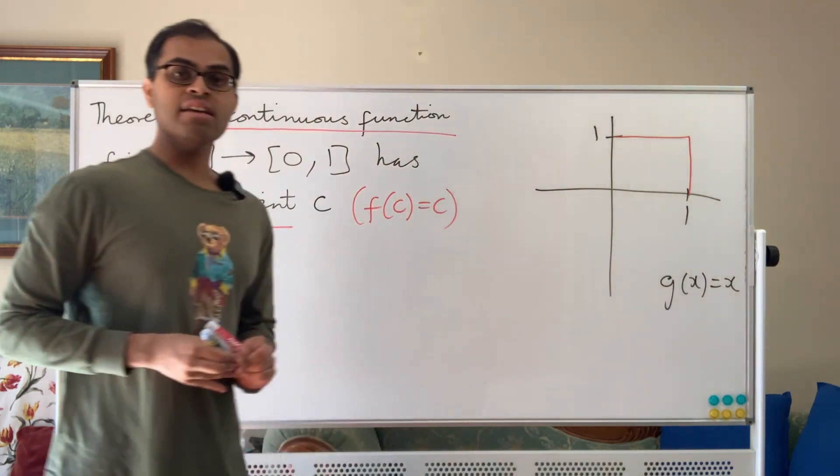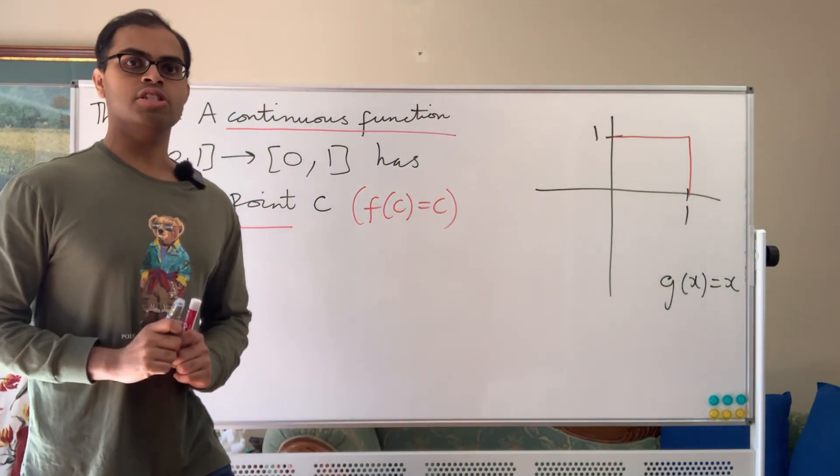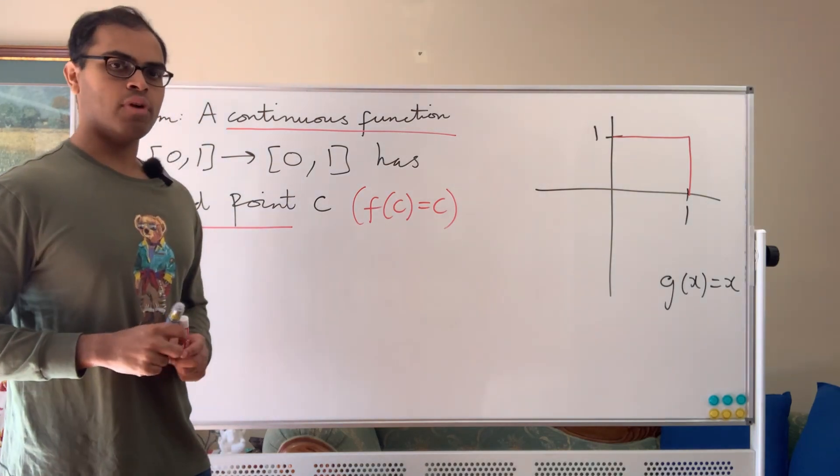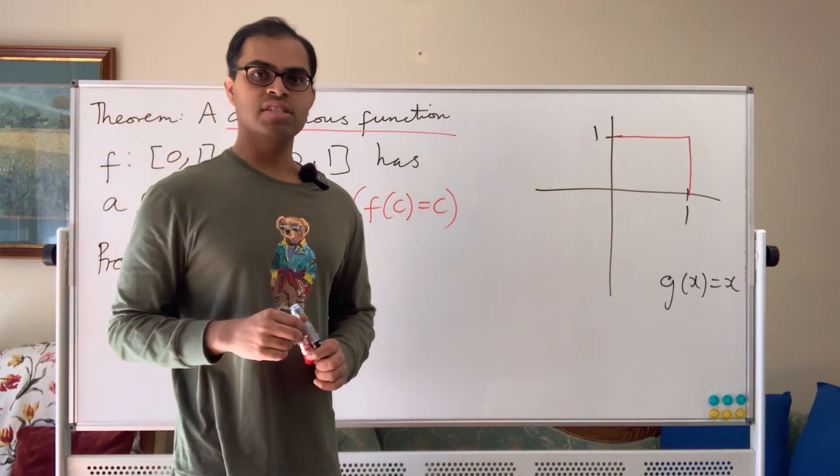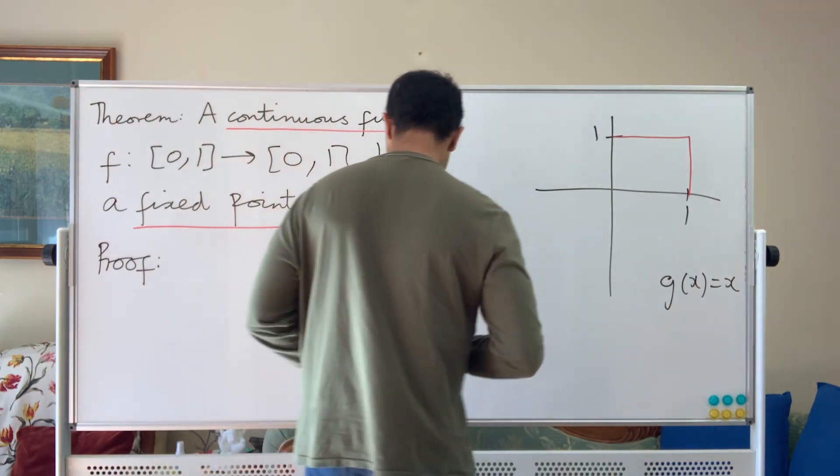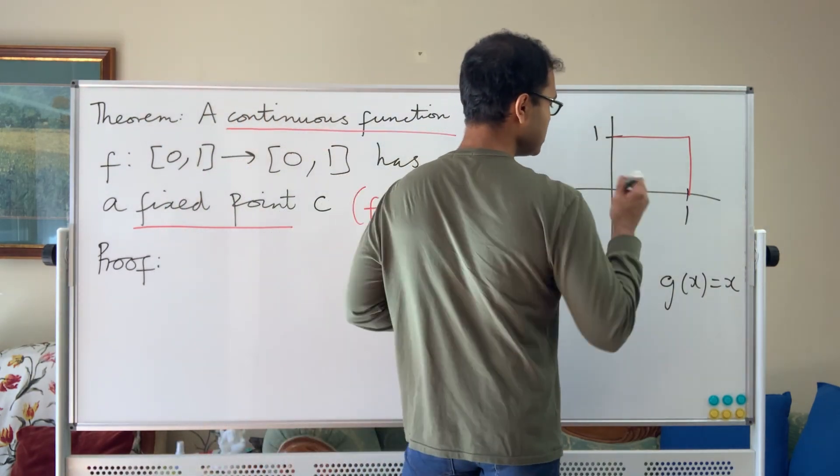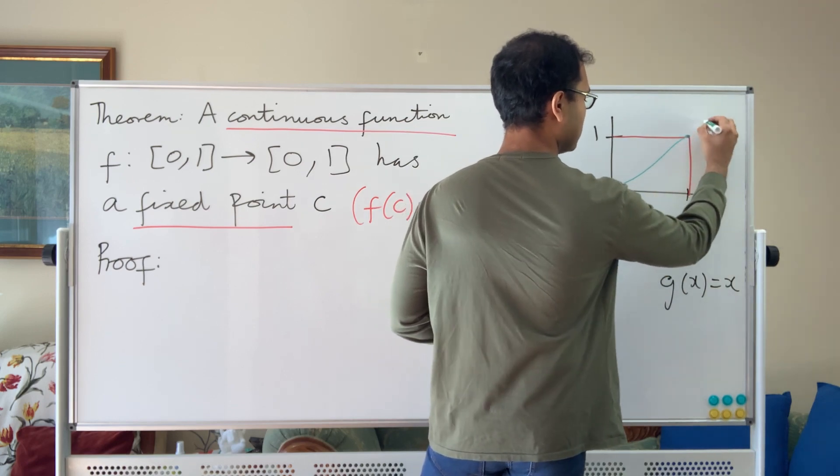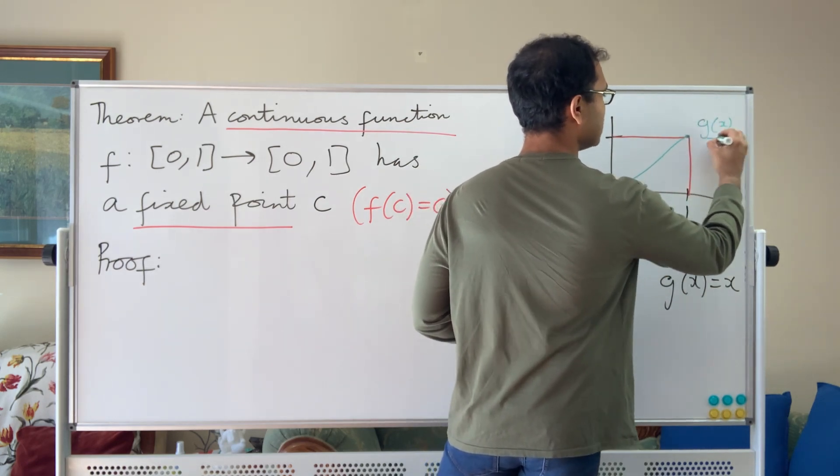Now we also have another function g(x) equals x, the identity function. We want to find a value c so that f(c) equals g(c), because g(c) is just c. We can graph g(x), the identity function, and I'm going to do it in green. It's just a straight line, the line y equals x. This is the graph of g(x) equals x.